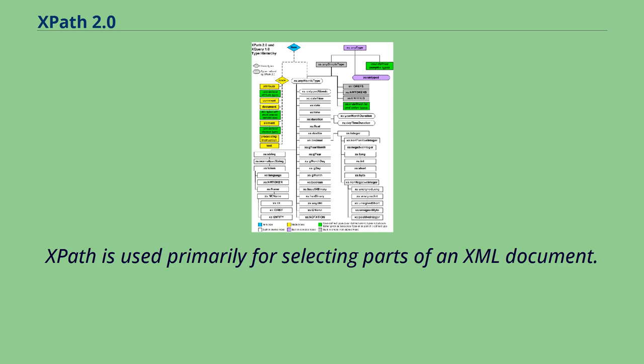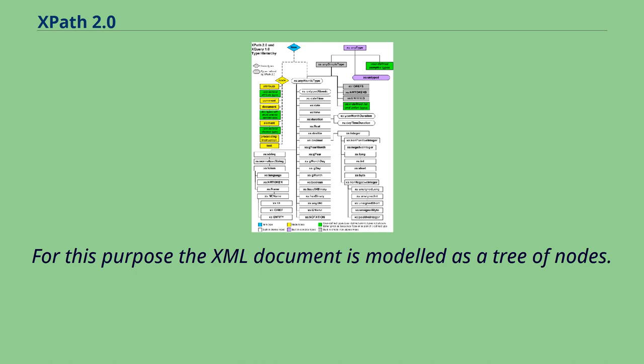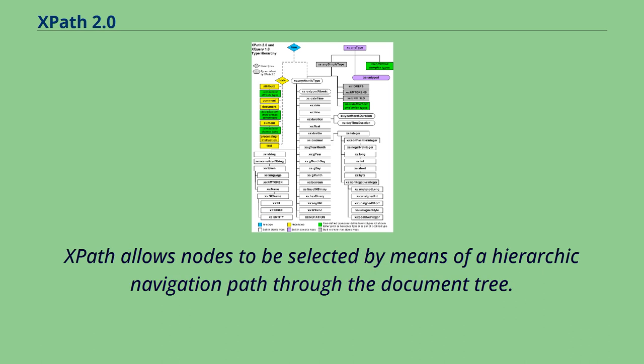XPath is used primarily for selecting parts of an XML document. For this purpose the XML document is modeled as a tree of nodes. XPath allows nodes to be selected by means of a hierarchic navigation path through the document tree.